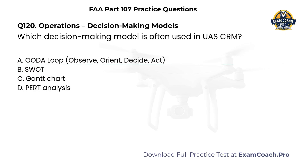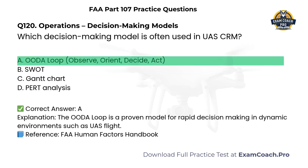Operations. Decision making models. Which decision making model is often used in UAS crew resource management? A. OODA Loop — Observe, Orient, Decide, Act. B. SWAT. C. Gantt Chart. D. Pert Analysis. Correct answer: A. The OODA Loop is a proven model for rapid decision making in dynamic environments such as UAS flight.